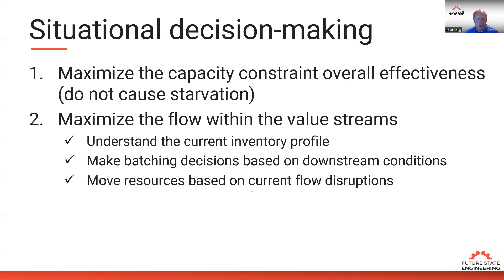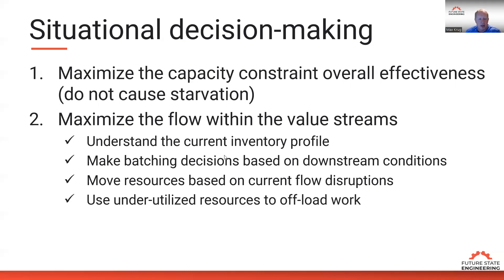If we have flow disruptions, we can move resources from one area to another to try to unblock those disruptions. We can also use underutilized resources to offload work — even if that equipment is slower, using those underutilized resources will improve the flow.